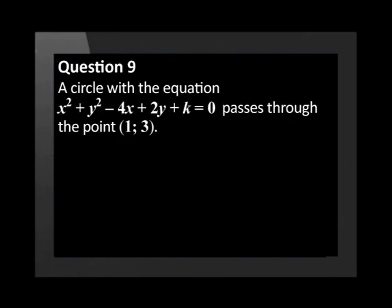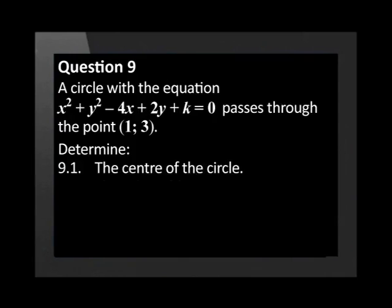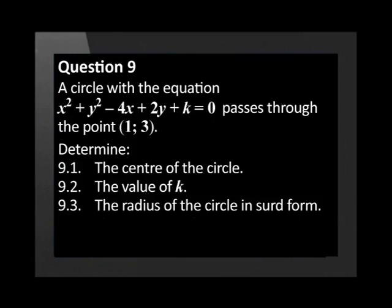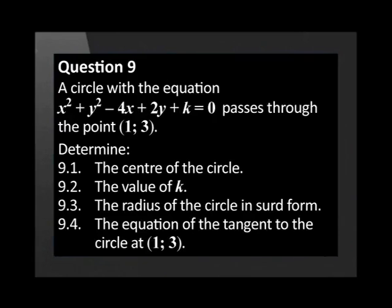A circle with the equation x² + y² - 4x + 2y + k = 0. Determine the center of the circle, the value of k, the radius of the circle in surd form, the equation of the tangent to the circle at (1, 3).